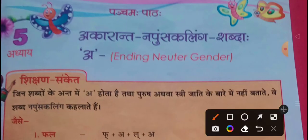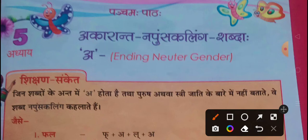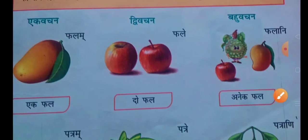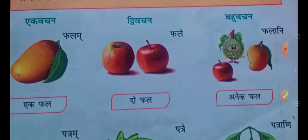Now we are going to see the a-kara words — words that end with 'a'. The ending means neuter gender. So here we have examples in ek vachan (singular), dvi vachan (dual), and bahu vachan (plural).